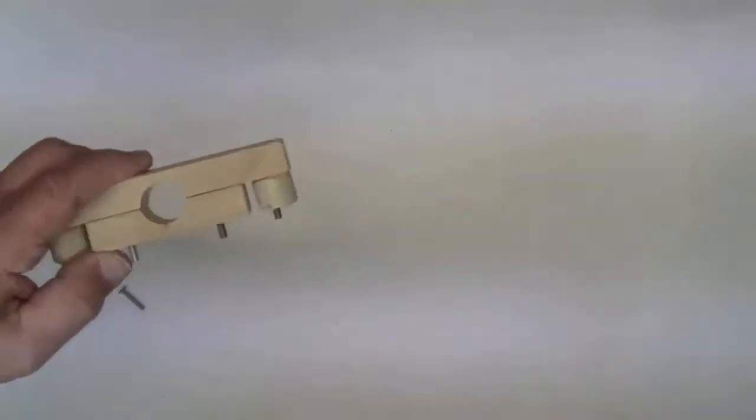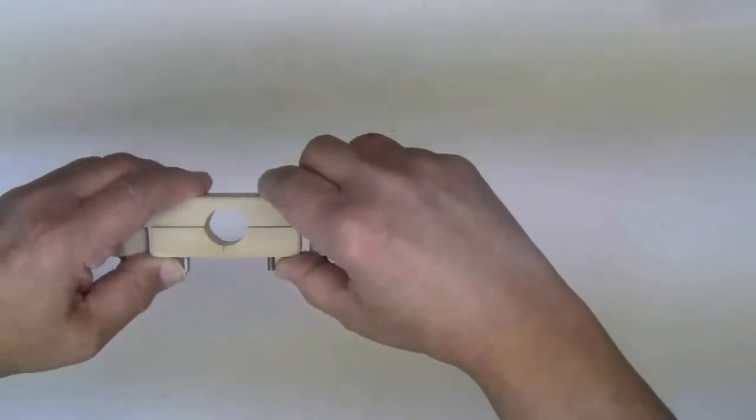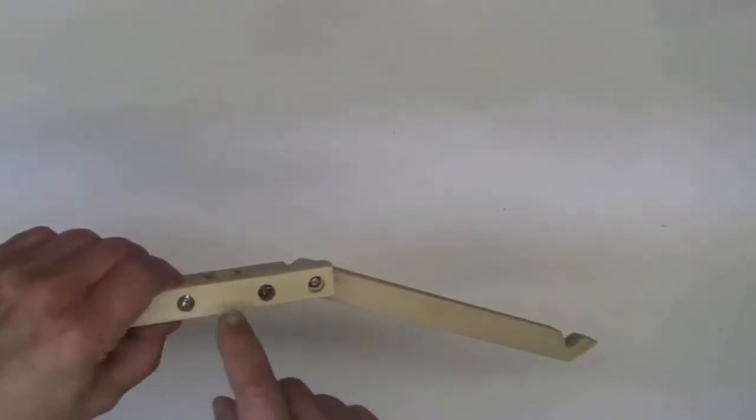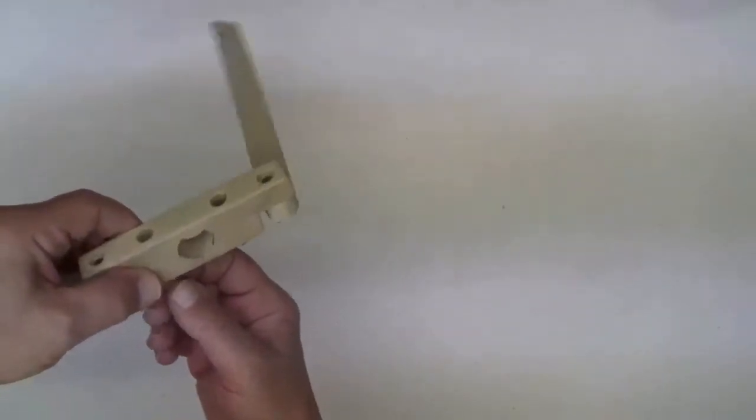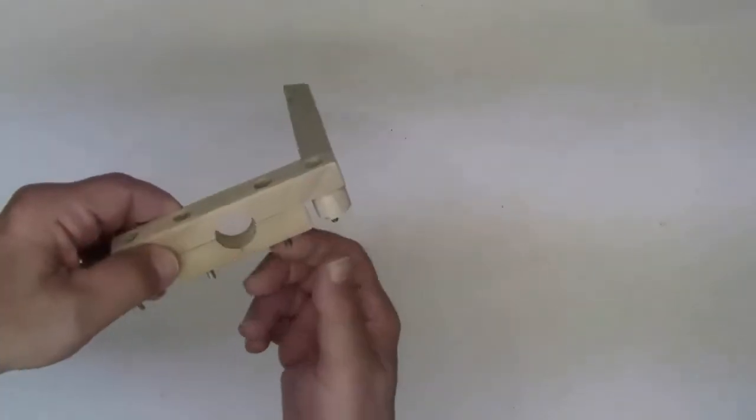When I take that spacer out, I can push this in and that creates a friction fit around that lower tube and holds it in place. I also recessed these holes so I could use shorter screws. I could just have put them on the surface and use larger screws. Either way will work.